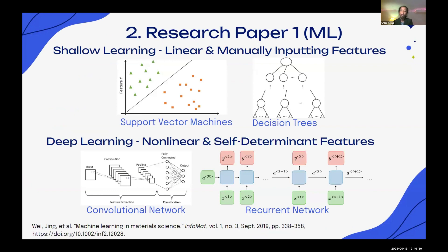Feature engineering describes taking information from raw data and incorporating it into algorithms, and this is very important within machine learning. Traditional machine learning methods reliant on shallow learning include the manual selection of features extracted from raw data. Researchers often spend significant effort identifying representative features such as elemental properties or structural characteristics for prediction targets. However, this manual process can be labor-intensive and may not always capture the most relevant information, potentially limiting model performance.